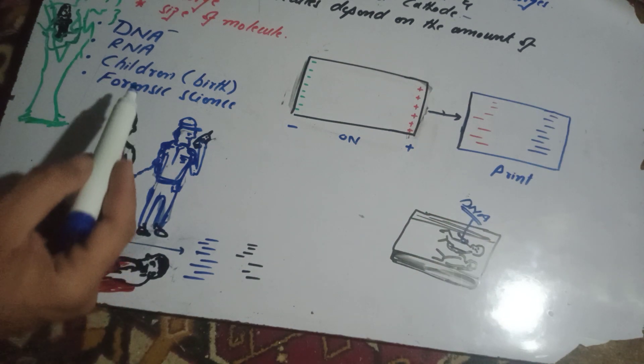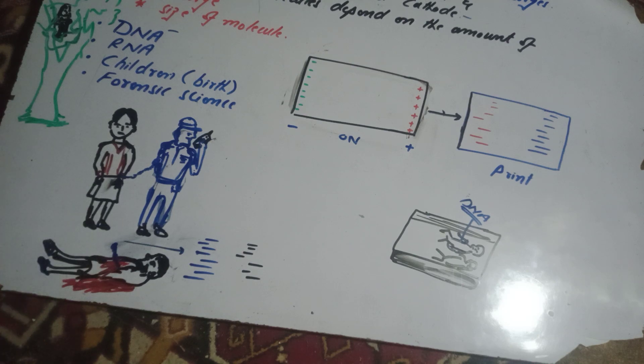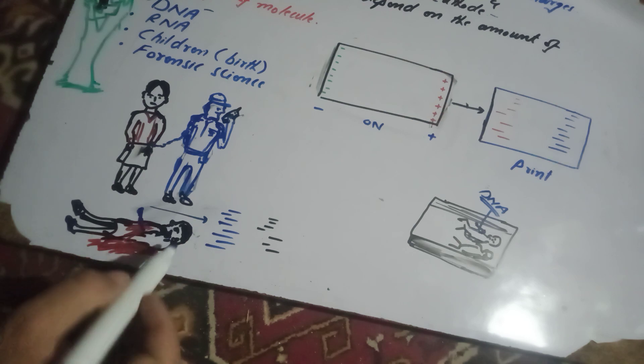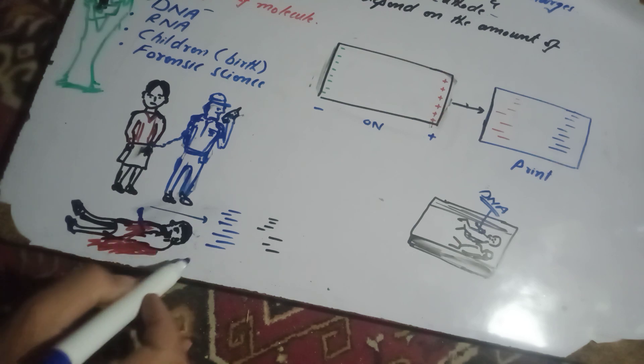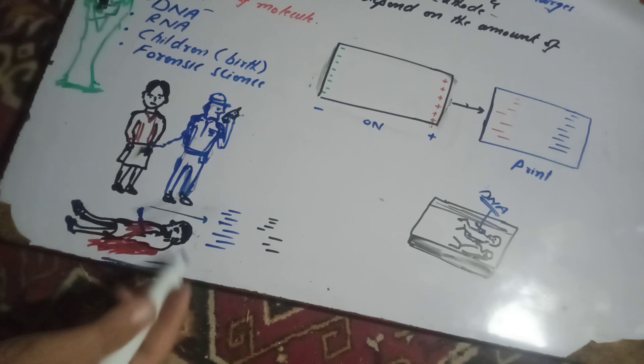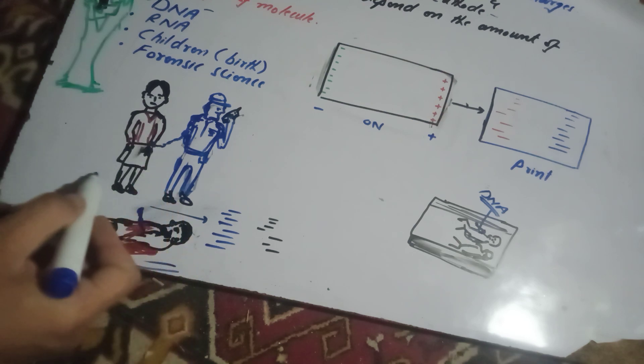In forensic science, a forensic biologist works with the police department. For example, when a human body is found, forensic analysis is carried out. A DNA sample is collected from the scene.